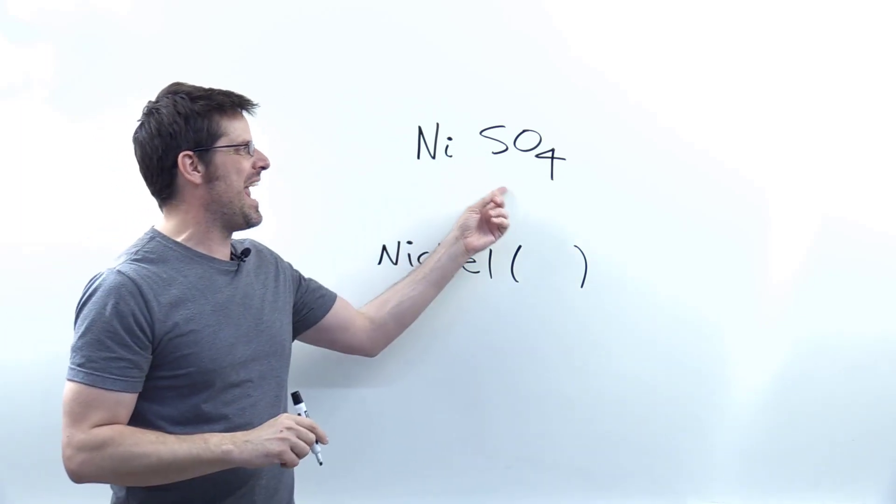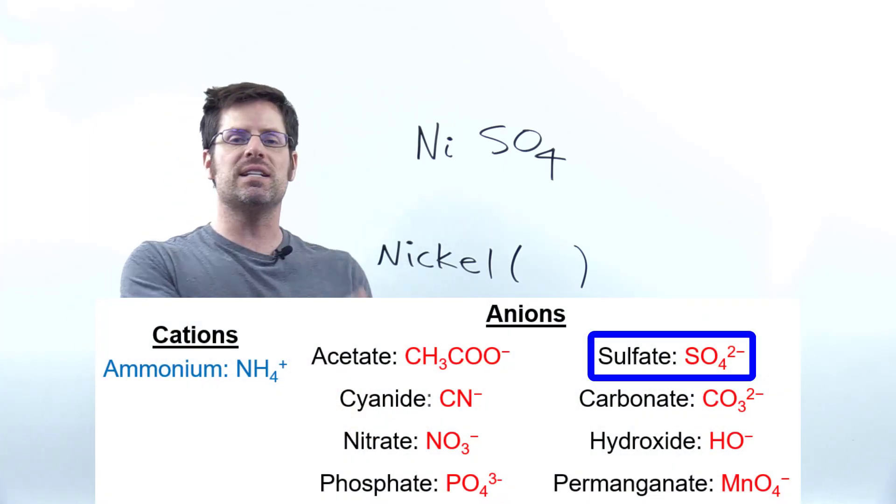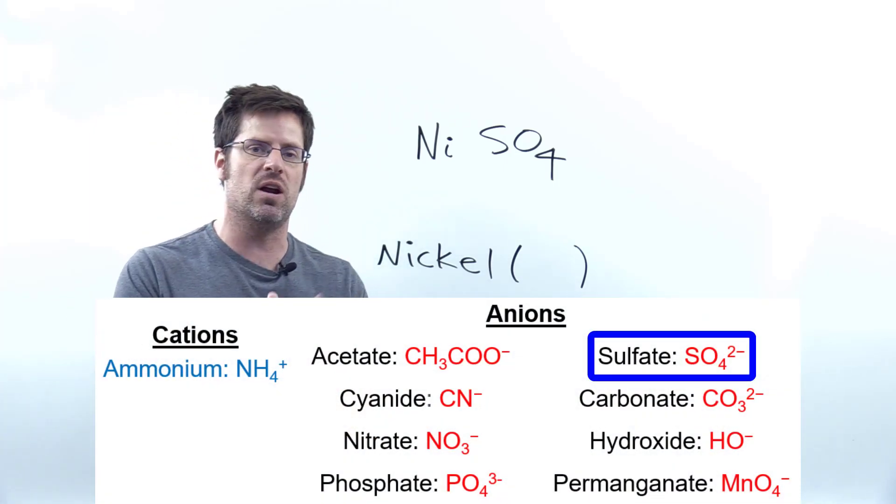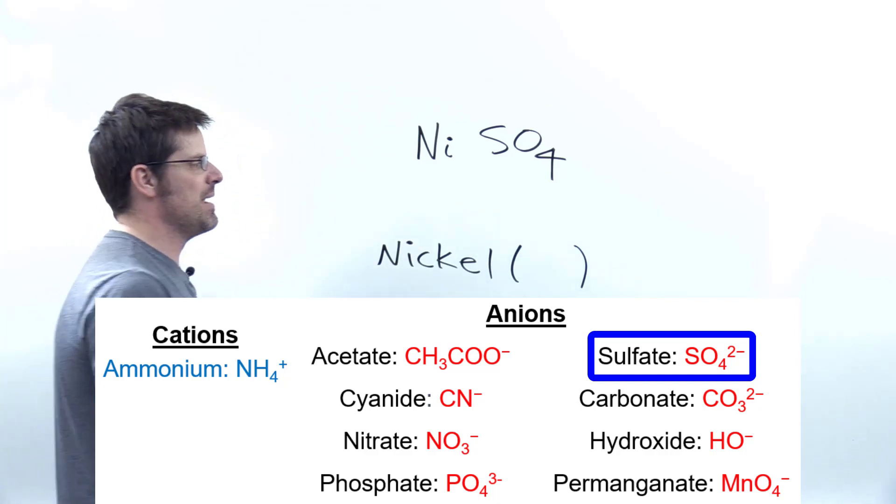To do so, we have to now look at the anion portion of this molecule, SO₄. Now, SO₄ is one of the polyatomic ions whose names, charges and formulas are shown here, which you should definitely memorize. Its name is sulfate. So I throw that name onto the end.